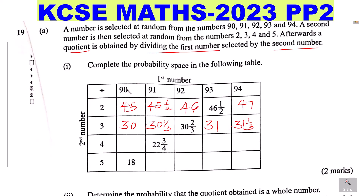We go to the third row. 90 divided by 4 gives 22 and a half. 91 divided by 4 is already filled. So 92 divided by 4 gives 23. Then 93 divided by 4 gives 23 and a quarter. Then lastly, 94 divided by 4 gives 23 and a half.